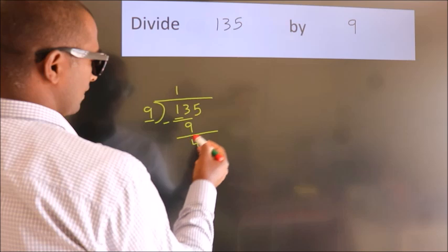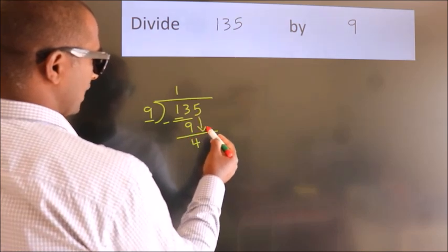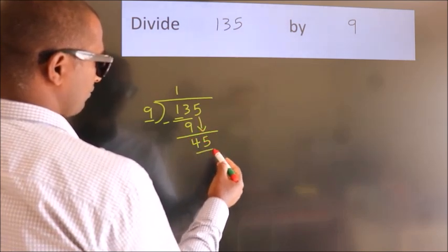After this, bring down the beside number. So 5 down. So 45.